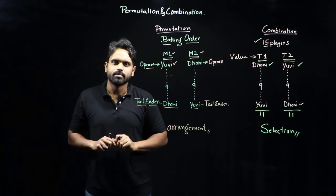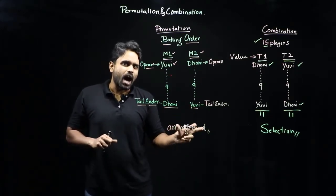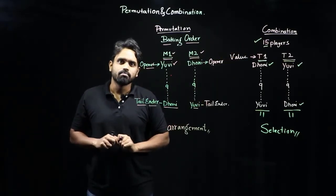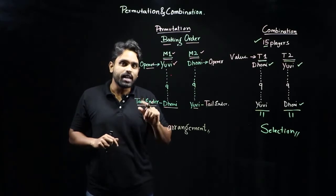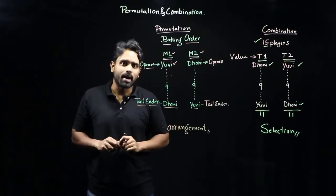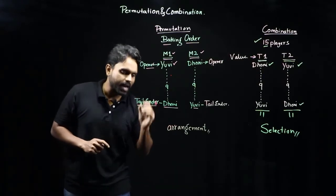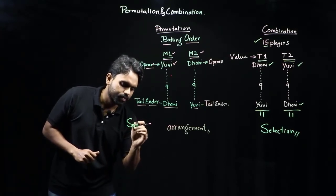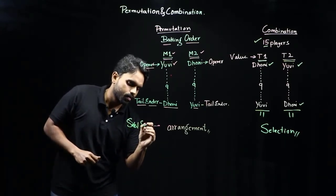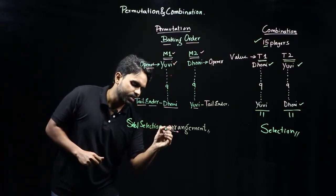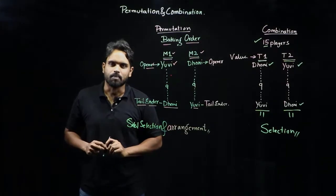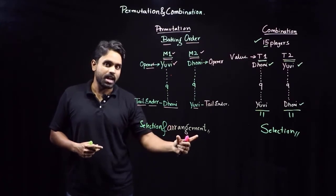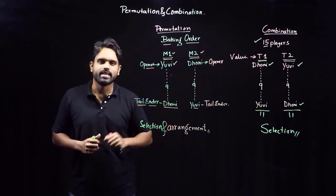Wait — can I arrange the batting lineup of 11 players directly from a 15-player squad? No. Before arranging the batting order, I first have to select the playing 11. So the process is: selection first, then arrangement. Therefore, permutation is selection AND arrangement, whereas combination is only selection.